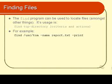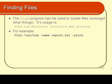For example, I might want to find in the top-level directory /usr/tom, so I start in /usr/tom and look in that directory and in all subdirectories, files that are named report.txt. So we'll only find files that are named report.txt and nothing else. And what do I want to do with those files? Well, I want to print them.